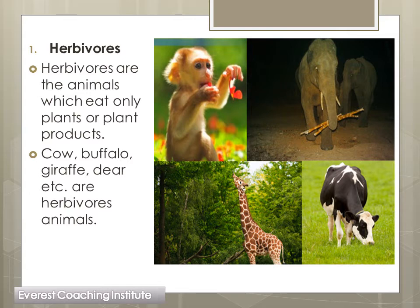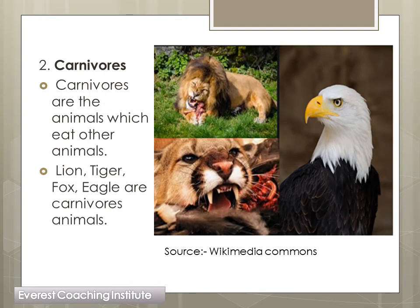So cow is a herbivore animal. Similarly, if you put flesh and chapatis in front of a dog, the dog will happily eat the flesh more than the chapatis. And monkeys - they are very fond of bananas; banana is their favorite, so monkeys eat plant products more. And elephant's main food is sugarcane, which is the stem of a plant as we discussed in the previous video. So elephant is also a herbivore. Animals that eat only plants or plant-based things are called herbivores. Examples: cow, buffalo, giraffe, deer, monkey, elephant.